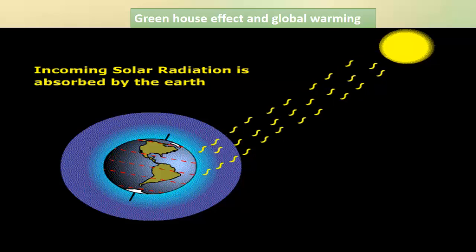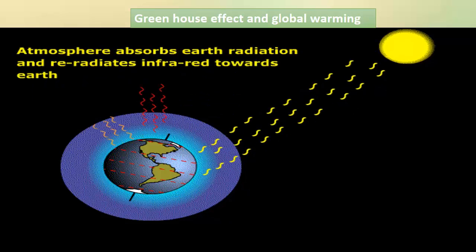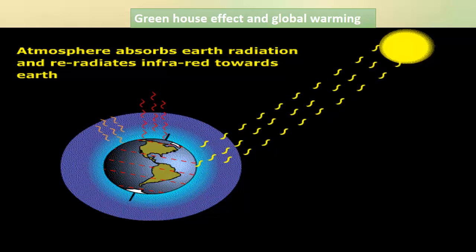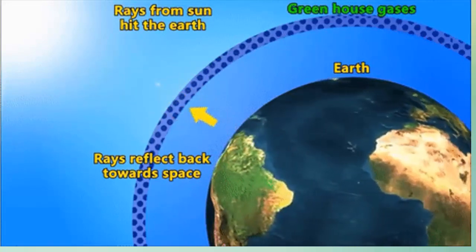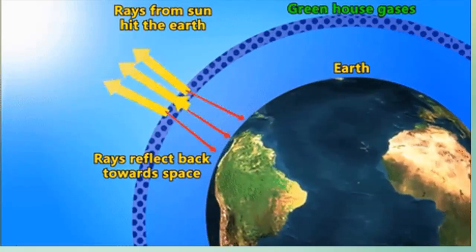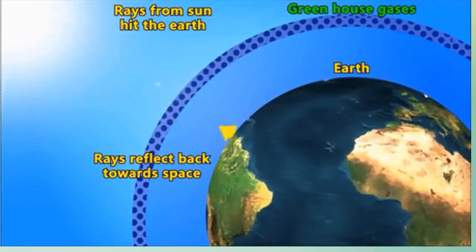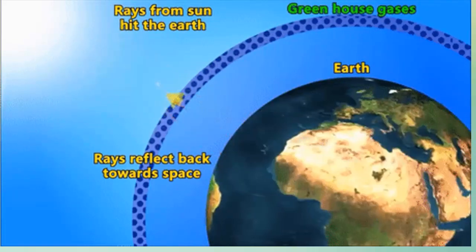Coming to the next: greenhouse effect and global warming. Our earth receives energy from the sun. The earth absorbs some of these rays and re-radiates them in the form of infrared radiation — that means, energy is released back to the atmosphere through infrared radiation. When these IR rays are going back, there is a layer of greenhouse gases — carbon dioxide and methane — which absorb these IR rays and send them back towards the earth's surface again.